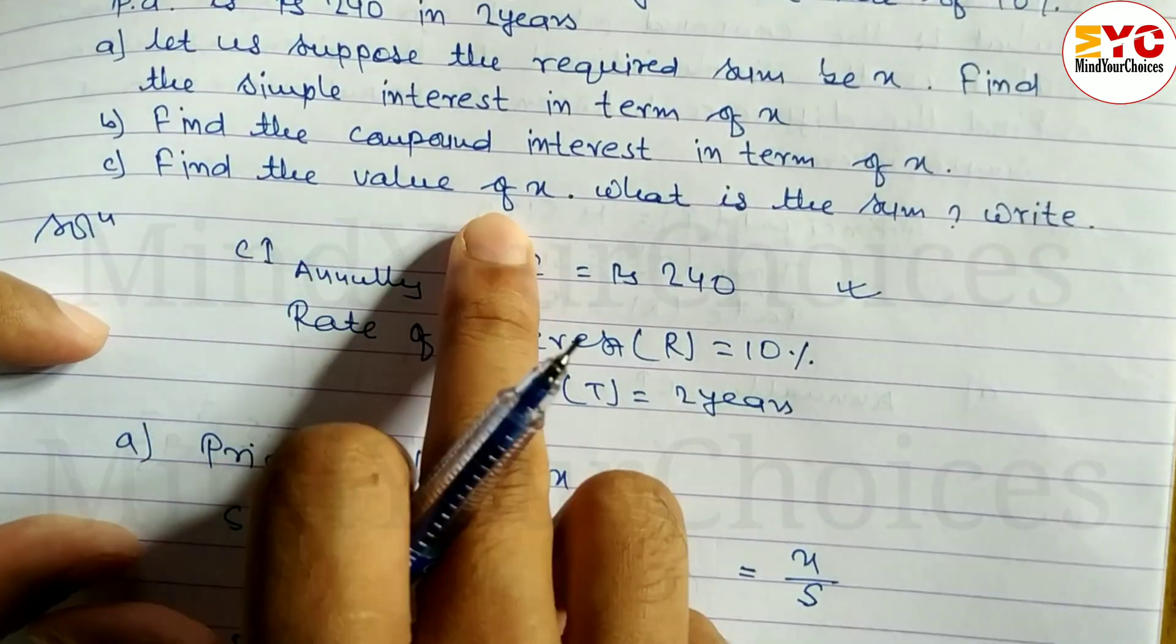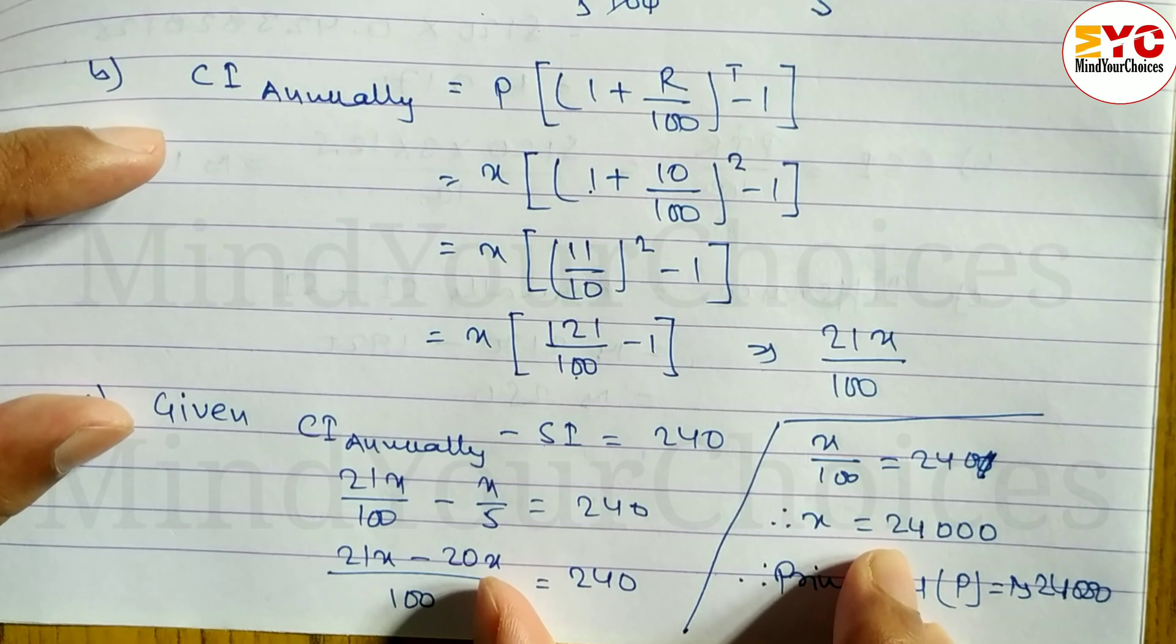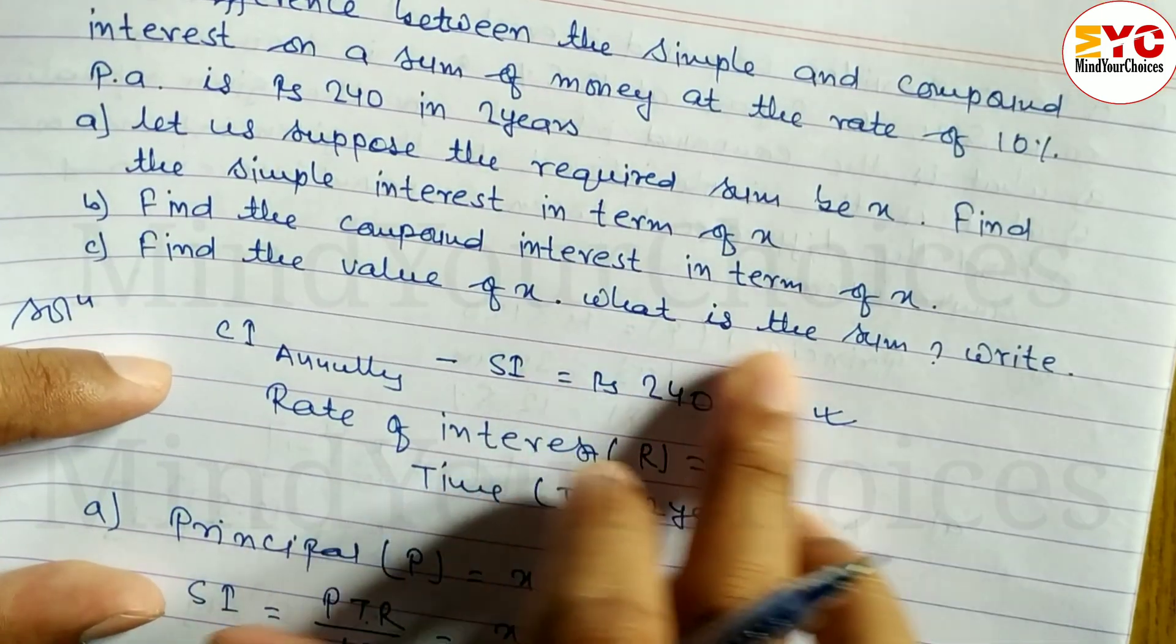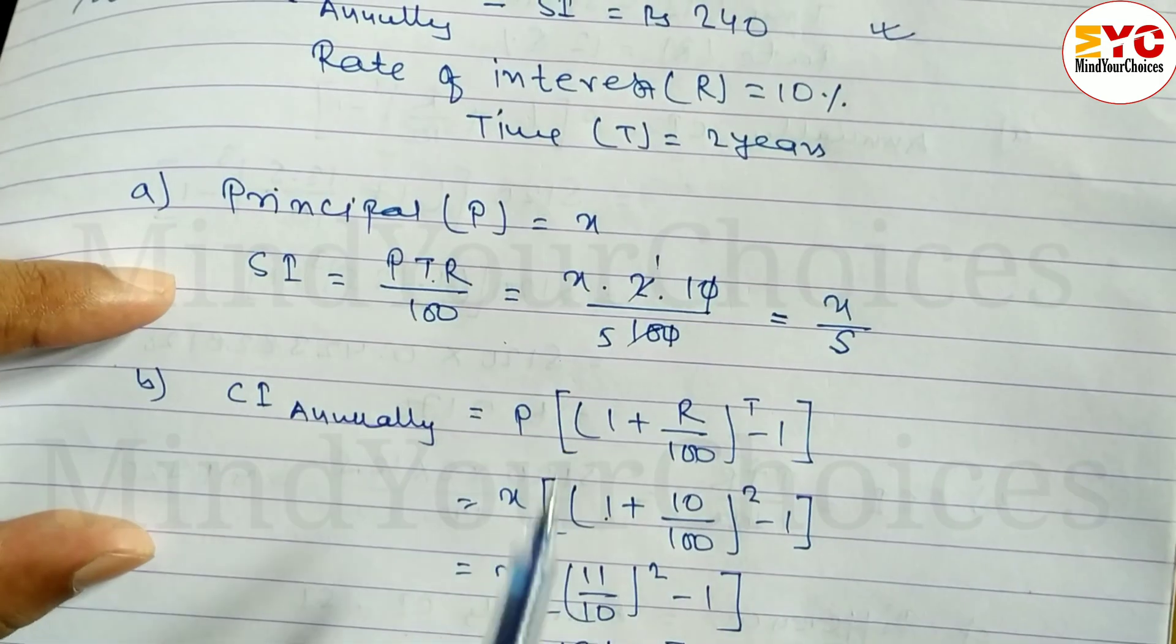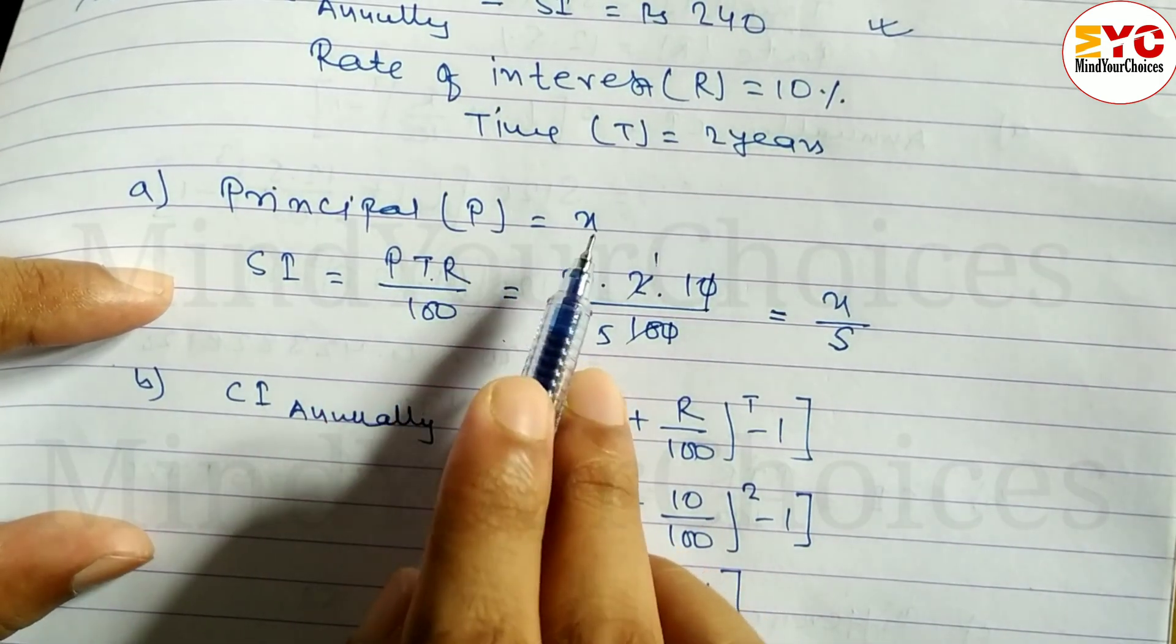What is the sum? The sum is the value of x, the principal. We took x as the sum, which is 24 thousand.